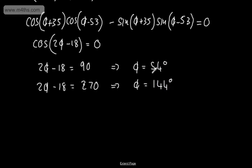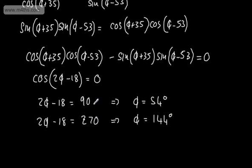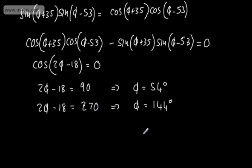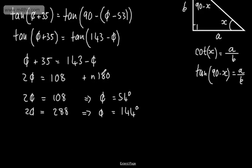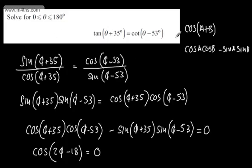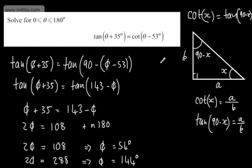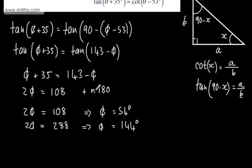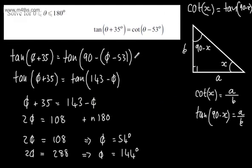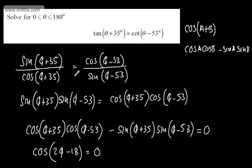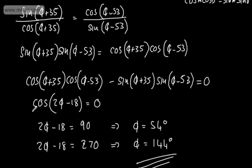Either way around, we get the two solutions 54 degrees and 144 degrees. Using the addition formulae or using the cot and tan identity, both approaches work. It's important to remember that if you're using the tan approach, you need subsequent solutions since the tan curve cycles every 180 degrees. It's a common misconception that solving for one gives the only answer — do consider both solutions.